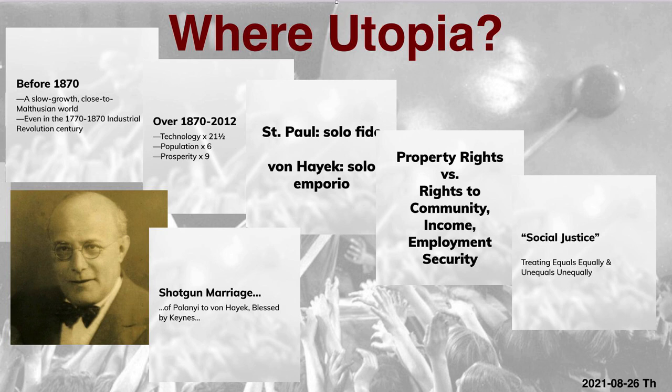Others thought differently. Karl Polanyi thought that people wanted not only property rights, but rights to community, to income, to employment security, rights to social justice, rights to being treated equally — and also rights to treat their unequals unequally. The fact that the market would not produce this, but would only produce prosperity accompanied by creative destruction, was the problem. As Polanyi put it, the market tried to destroy society, and society would not stand for that.